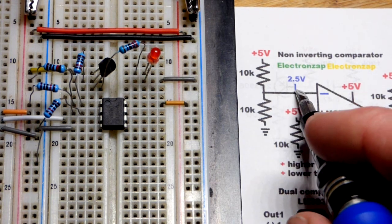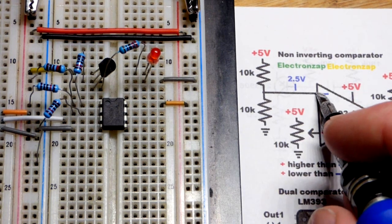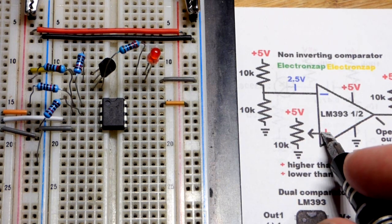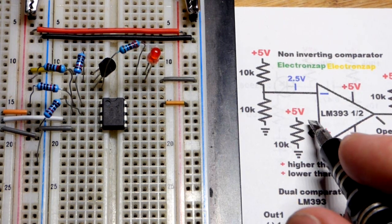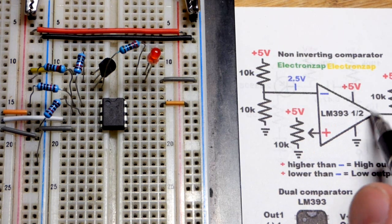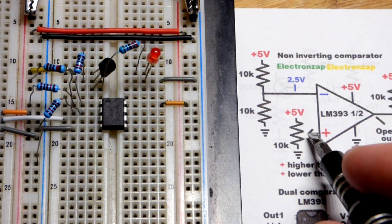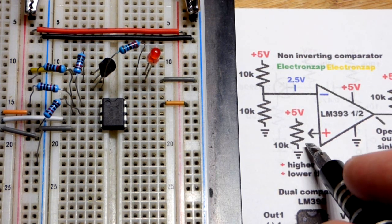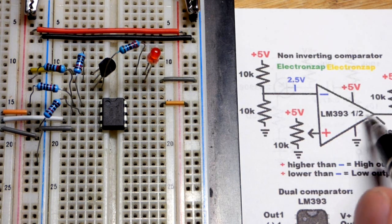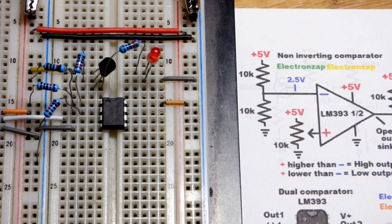But we have that reference 2.5 volts to the inverting. And so at the non-inverting, if it gets higher than that, closer to 5 volts, output is high, which actually means it turns off. And we drop below 2.5 volts. Then the output is low, which actually does connect to ground.